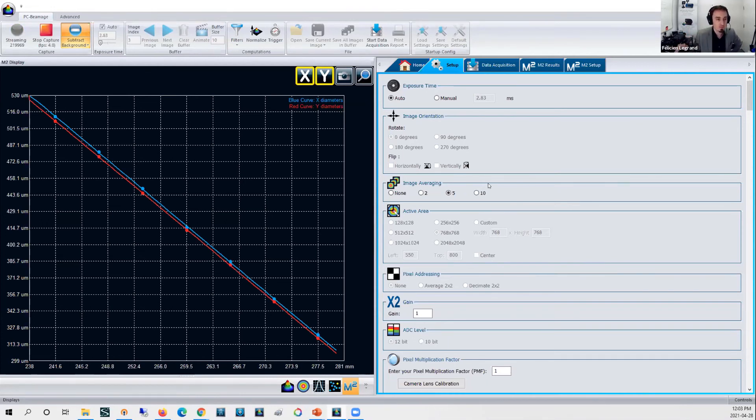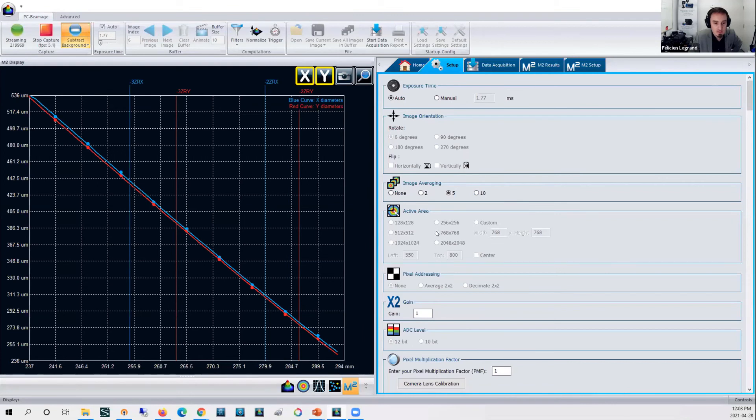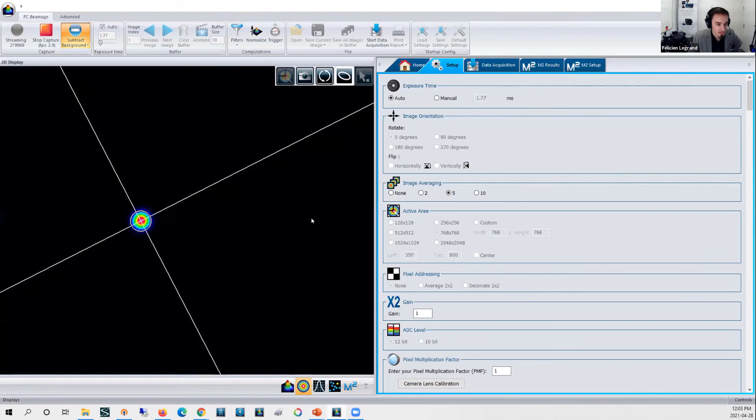Some image averaging, that's an option to smooth out the profile of your laser beam. That also helps to clearly define the X and the Y axis of your beam automatically. So we do recommend to use 5 to 10 frames per measurement as an average. Active area, that's what I've used, 768 by 768 square region of interest. That's the size of my window here basically to get a little bit faster.